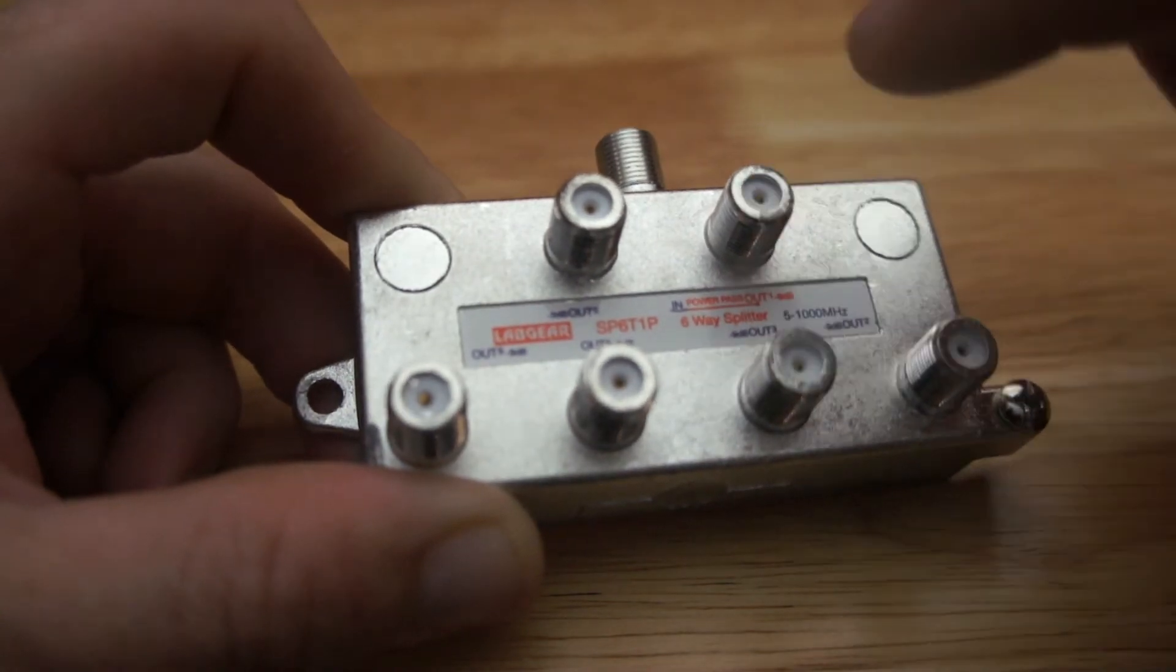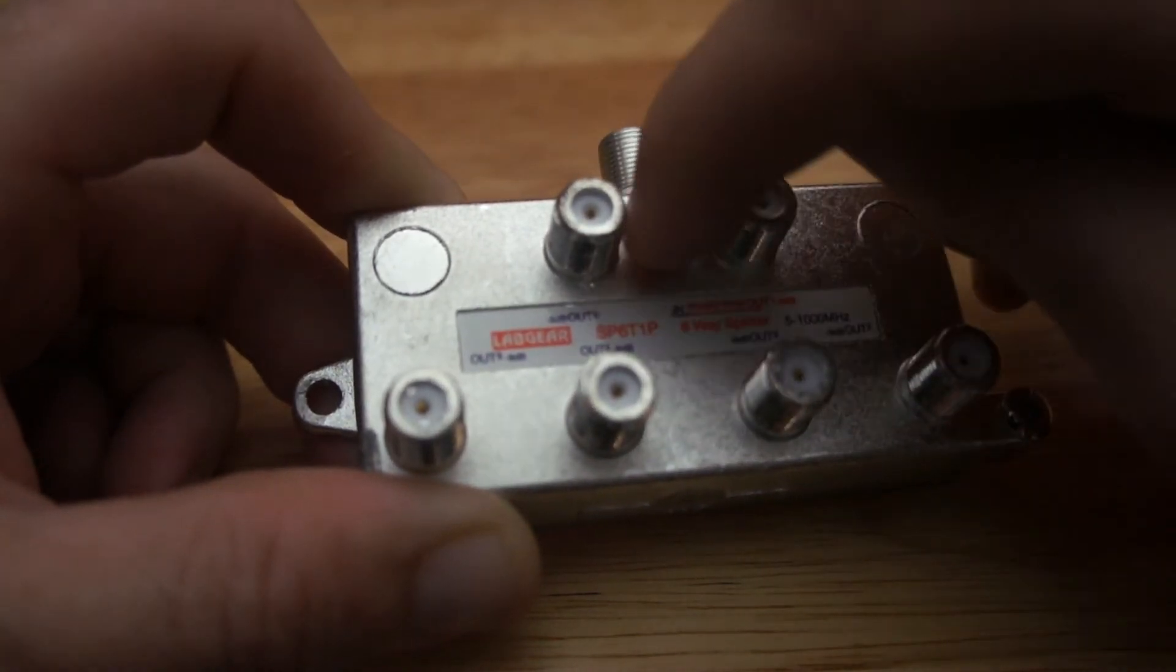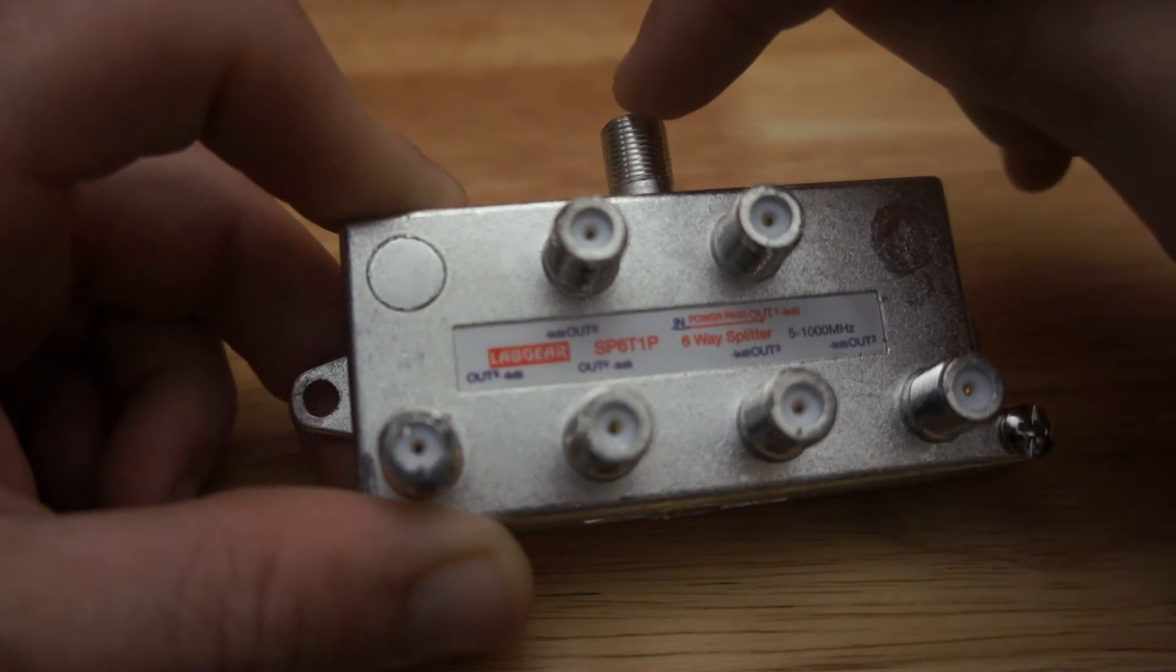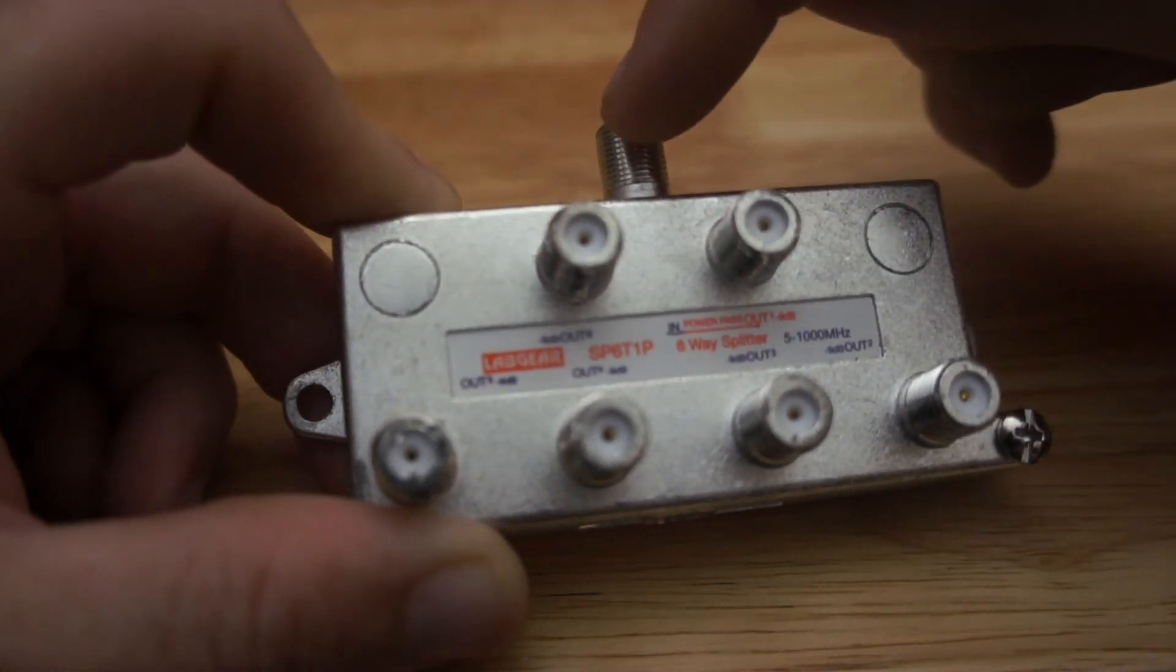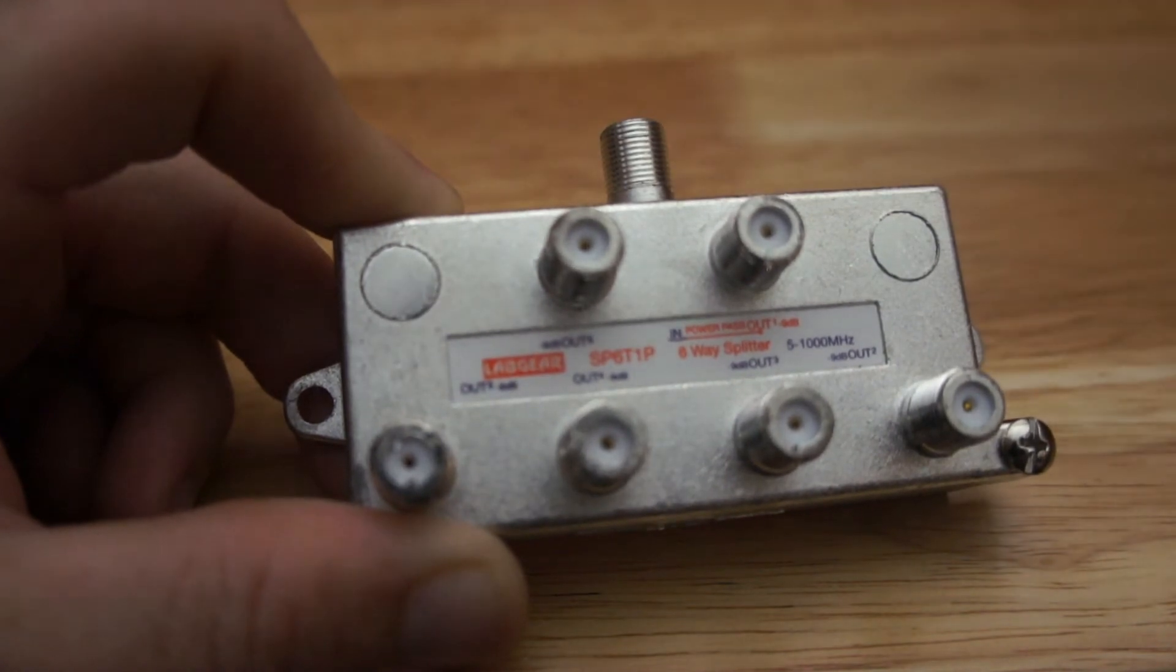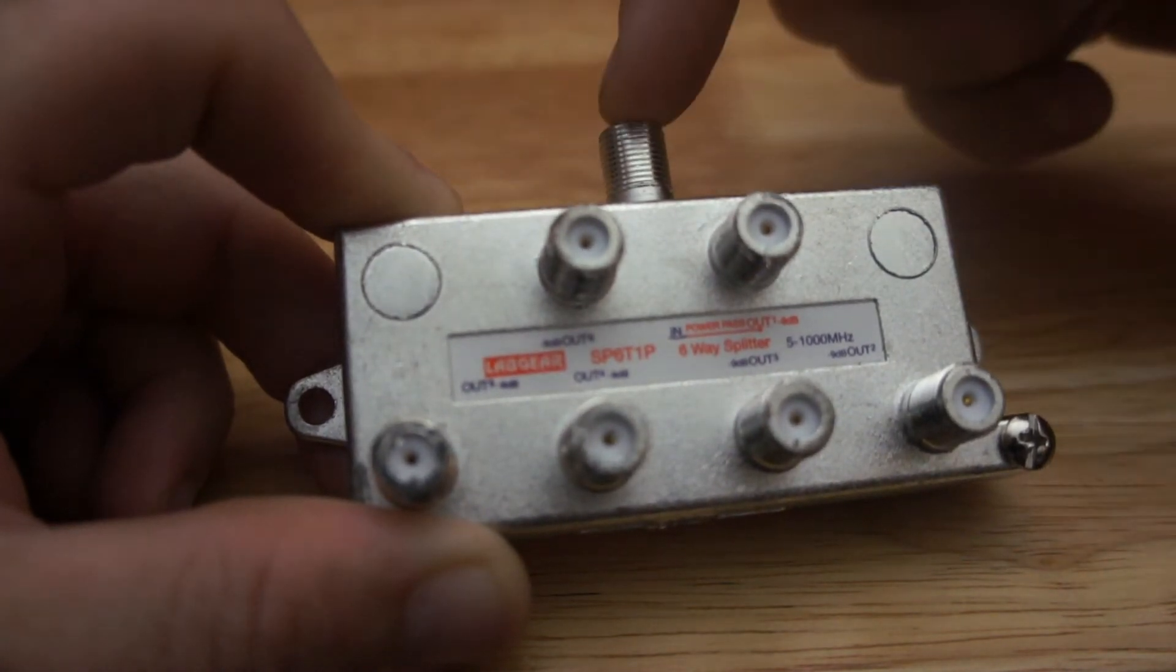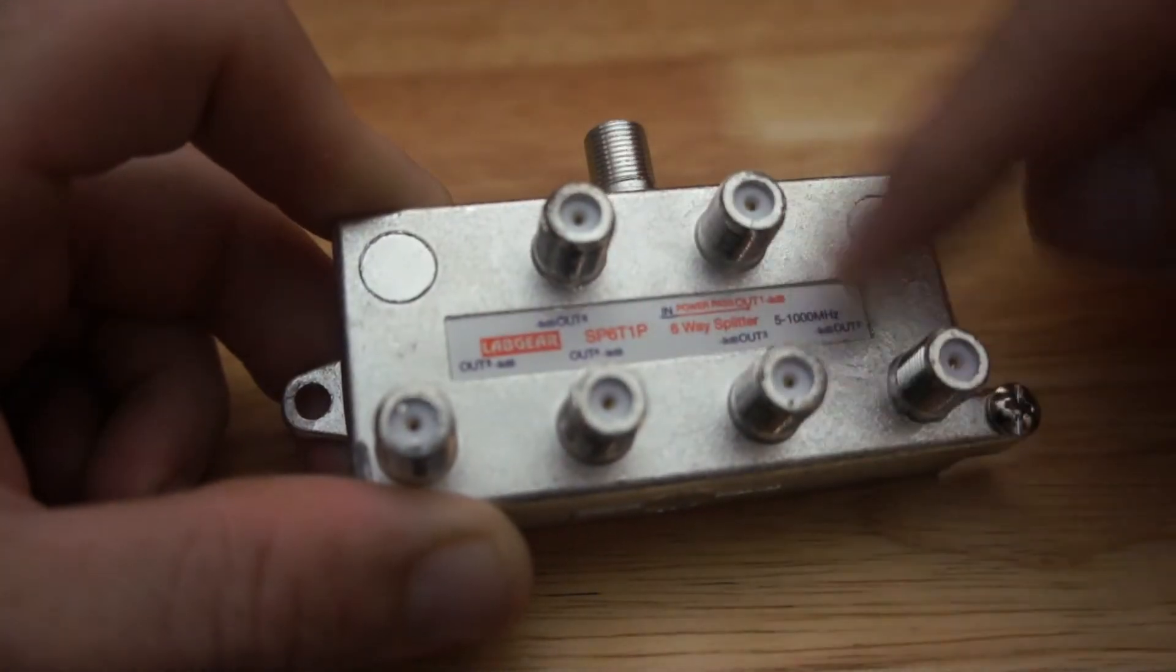This allows 12 volts to go through the splitter, up, back up to the antenna, where the booster would be. The booster would sit up on the antenna, come down from the roof, connect in here, and then you've got these six outlets.